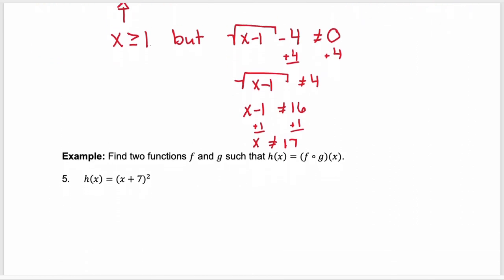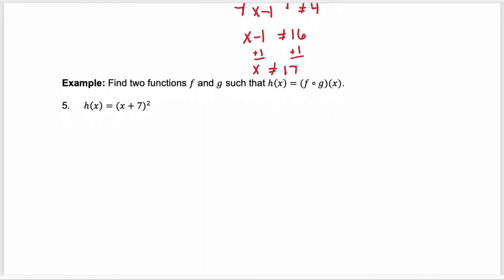In our last example, we're given the composition and we're asked to find two functions f and g that could create that composition. So our composition is x plus 7 squared. I always look at the order of operations to give me some sort of hint as to what the two functions are. So if I were to evaluate something here, some value of x, my first step would be x plus 7, and then my second step is to square it.